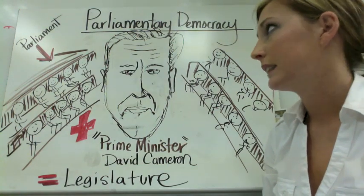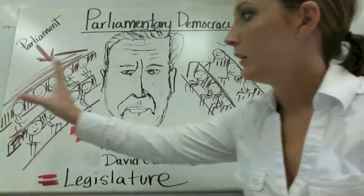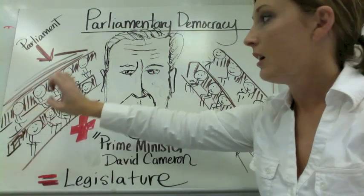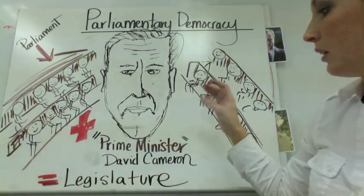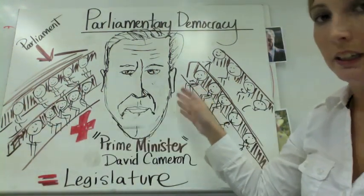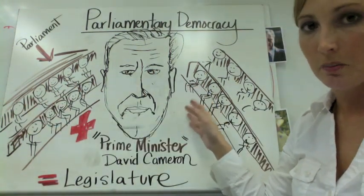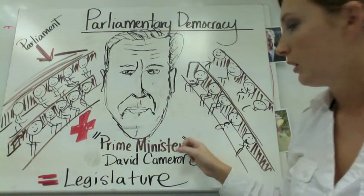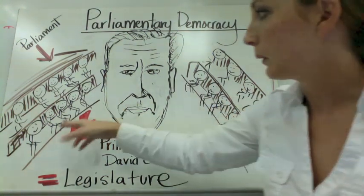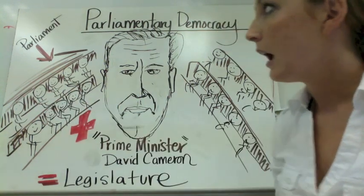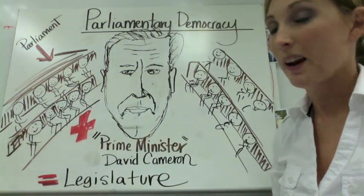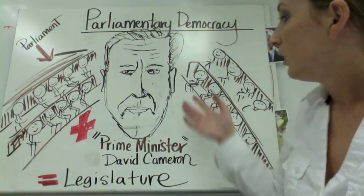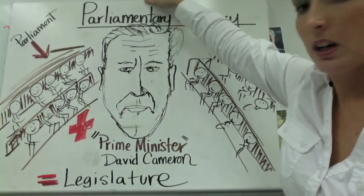With the United States, Barack Obama is completely separate — a separate entity, a separate branch. The prime minister, although he is the executive power, is part of the legislative branch. Parliament also has cabinet members that are appointed, and we will discuss that further in class.